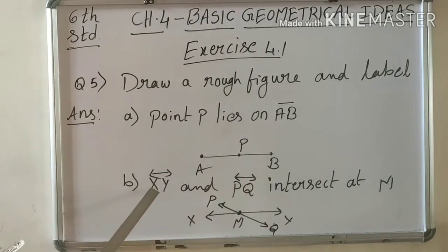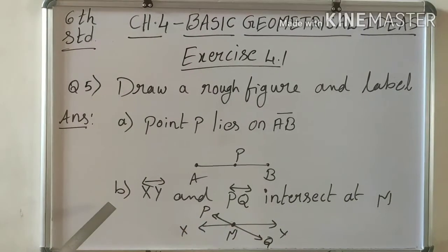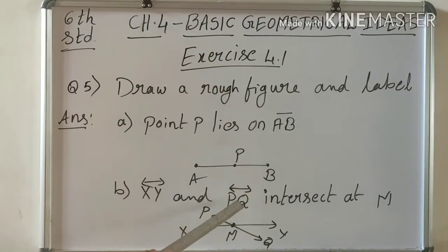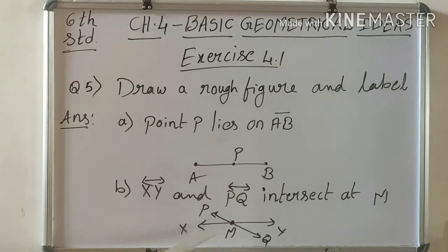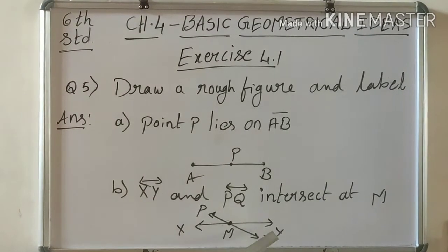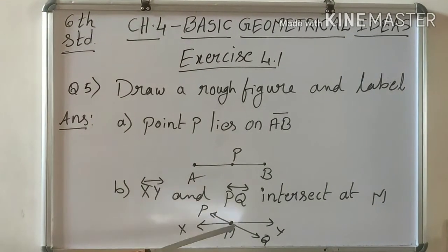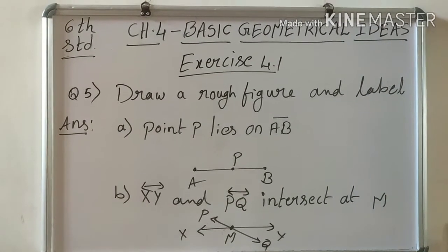B: XY and PQ intersect at M. Here XY and PQ are lines. They intersect at point M. Draw it this way: PQ and XY, these two are intersecting, and where? The point is M.